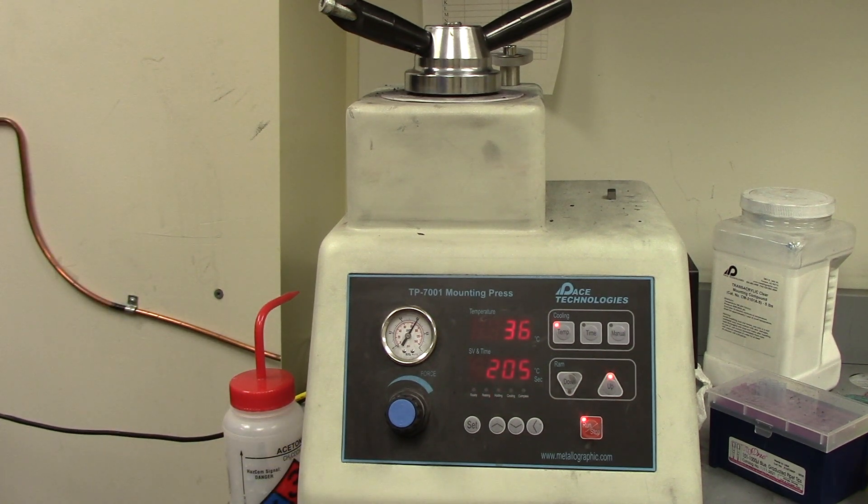Once that finishes, I'll be able to bring it over to the Tegramin 20 polisher and set it to grind and polish the surface to make it nice and smooth. However, let's say that you don't want to permanently mount your sample or that you want to be able to reuse it again. Let's move on to a different method to help quell your qualms.